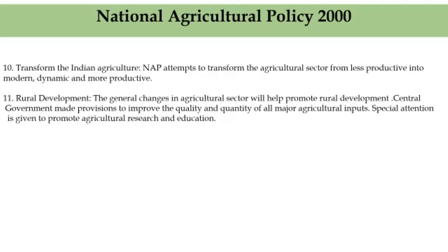The last feature of this policy is rural development. The general changes in the agricultural sector and related activities will help to promote rural development. Development of tiny, cottage, and small-scale industries in rural areas would reduce seasonal and disguised unemployment. Indian agriculture possesses numerous challenges and opportunities, and the 2000 policy addresses these challenges and attempts to increase existing opportunities for agriculture, even for the educated youth, and for the vast population that depends on this sector.